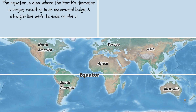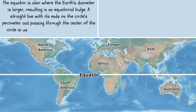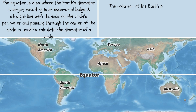A straight line with its ends on the circle's perimeter and passing through the center of the circle is used to calculate the diameter of a circle. The rotation of the Earth produces the equatorial bulge.